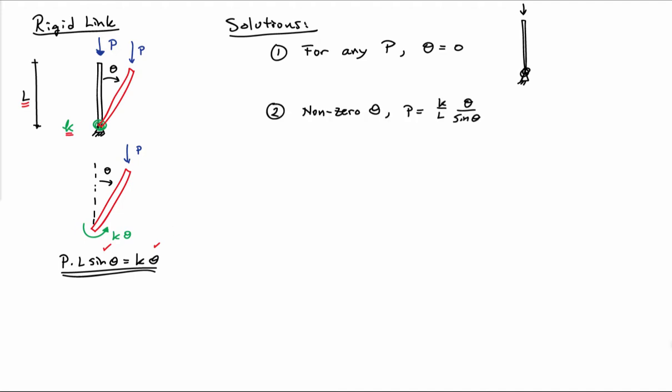There's a second equilibrium here, and that's associated with the case of theta being non-zero. We can rearrange the relationship to say the solution occurs for P is equal to K over L times theta over sine theta. It's just a rearrangement of my equilibrium equation.